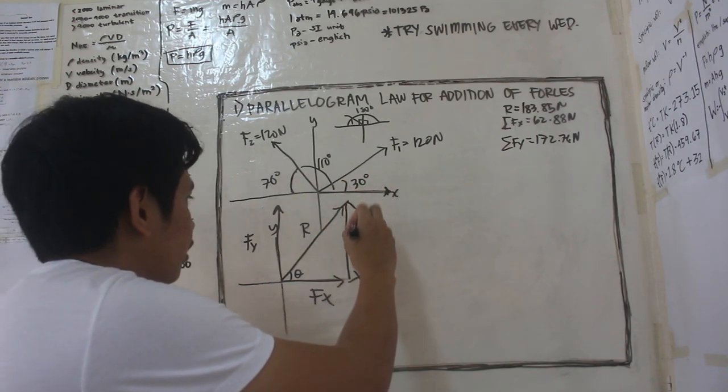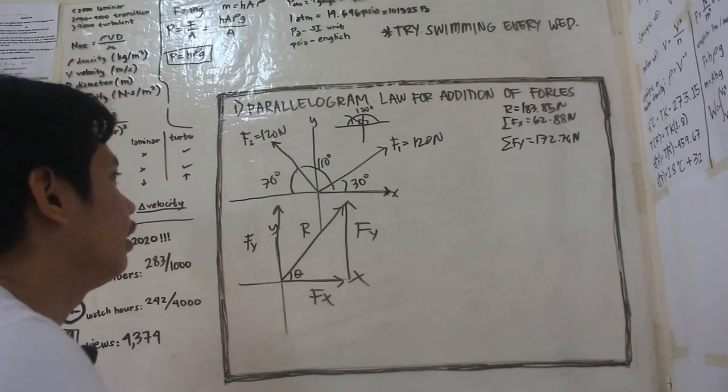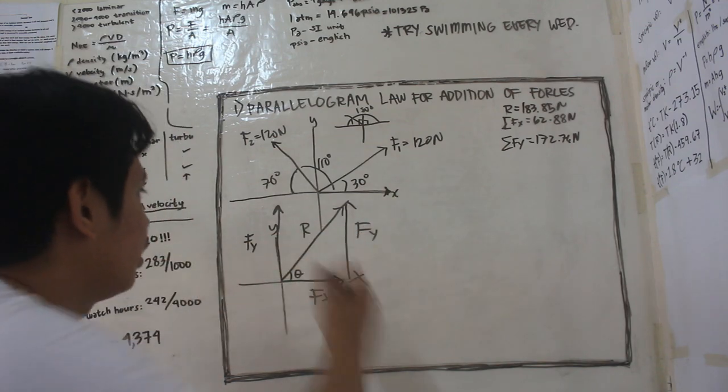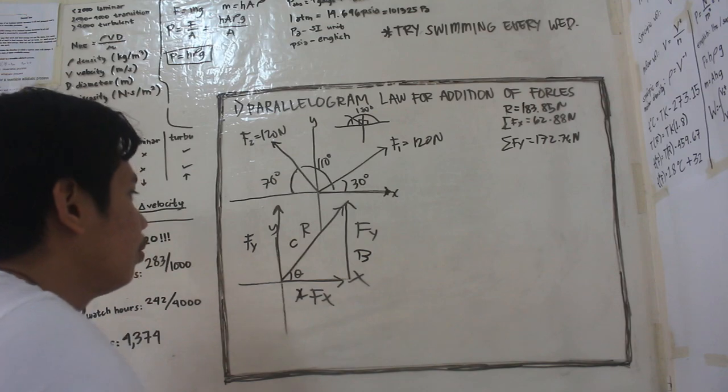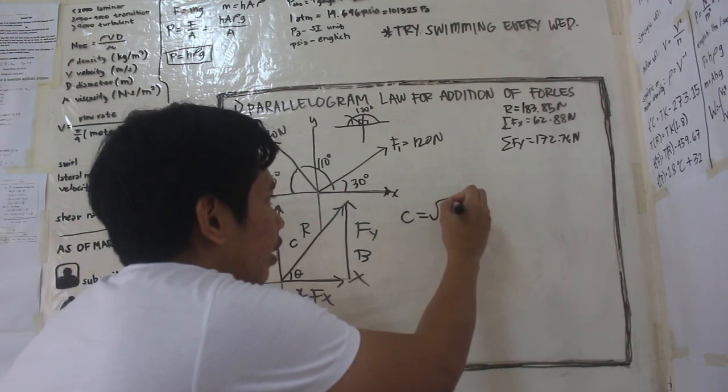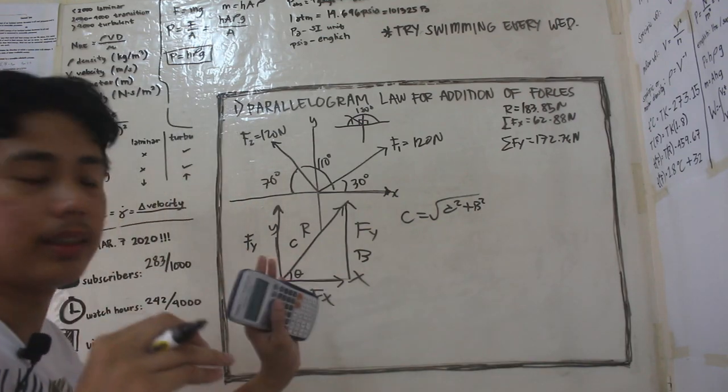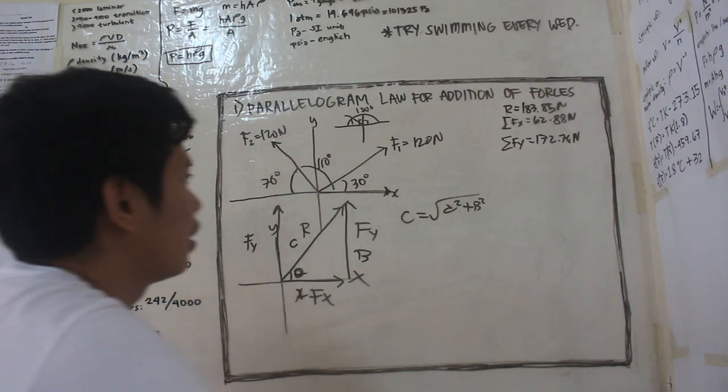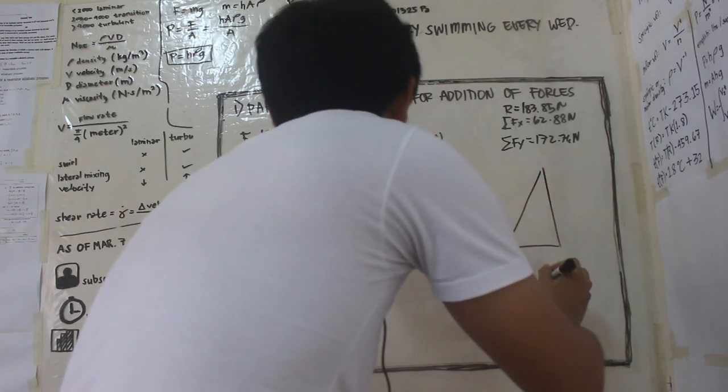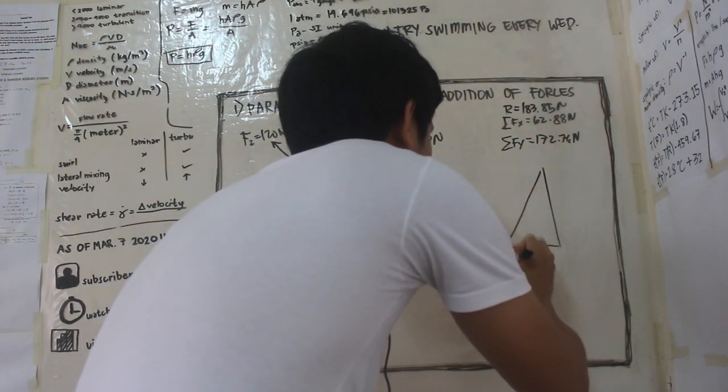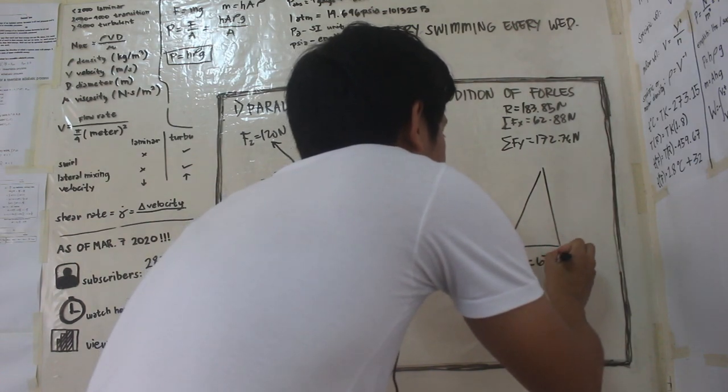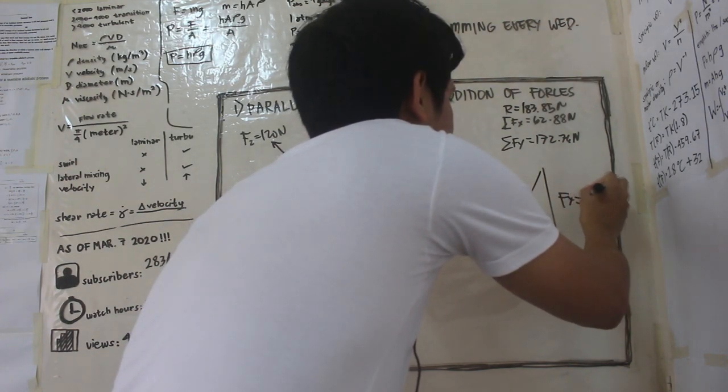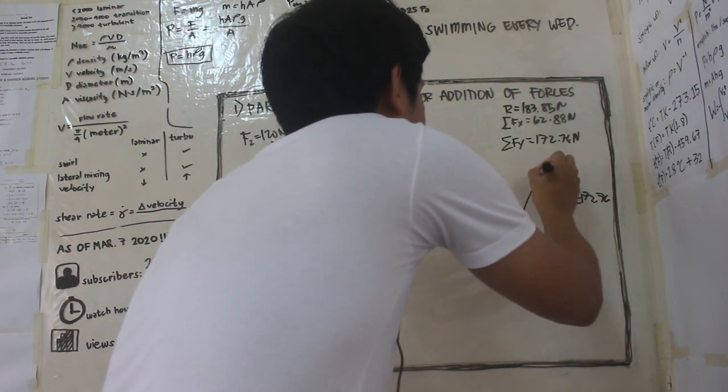So diba, ito, pwede natin itong i-transfer dito, parang ganun. So ito na yung f of y natin. And it makes sense din naman, kasi sa Pythagorean theorem, ito magiging c, ang hypotenuse, a plus b. So c is equal to square root of a plus b. Tama, ganyan. So kukunin natin yung theta dito. Since meron na tayong, idraw na lang yung triangle natin dito banda.